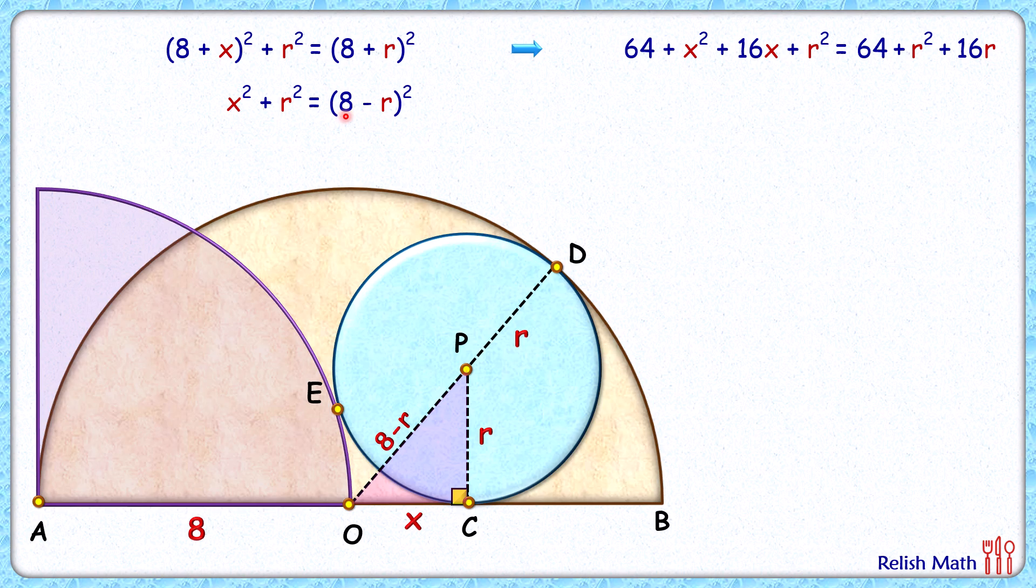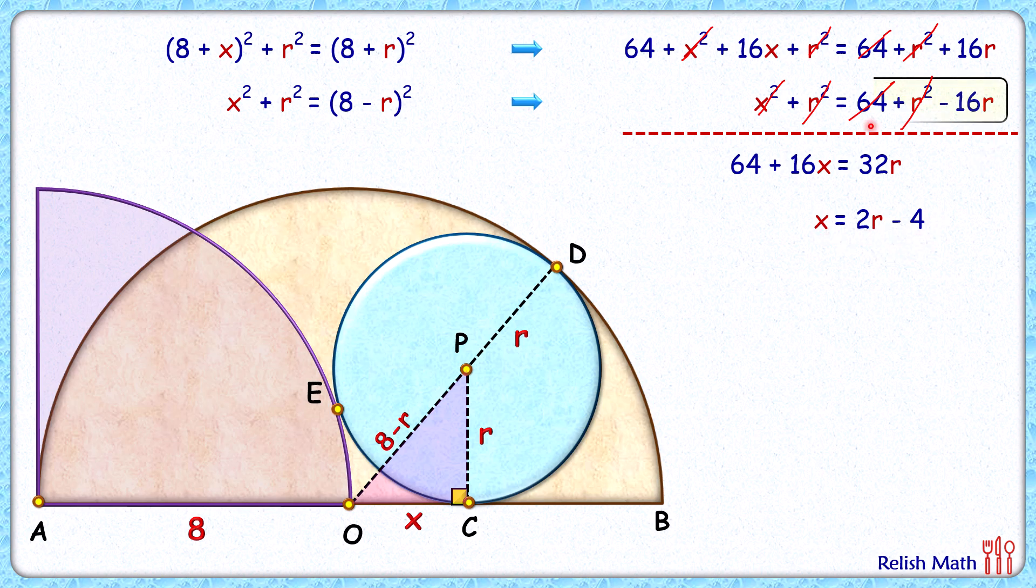On the right side, applying a - b whole square identity, we'll get the LHS is same, RHS will be 64 + r² - 16r. Now subtracting these two equations, x² will get cancelled, r² will also get cancelled. On the right side, 64 is getting cancelled, r² is getting cancelled. So what we'll get here is 64 + 16x = 32r. Simplifying it, we'll get x = 2r - 4.